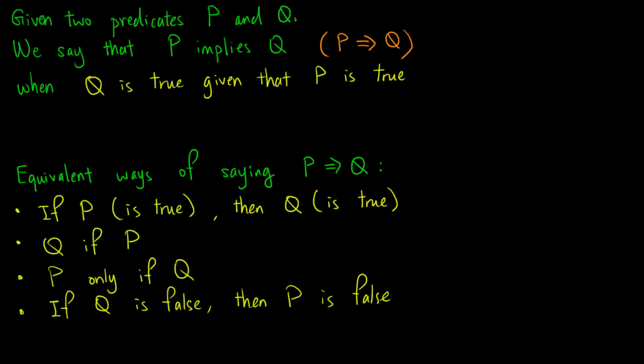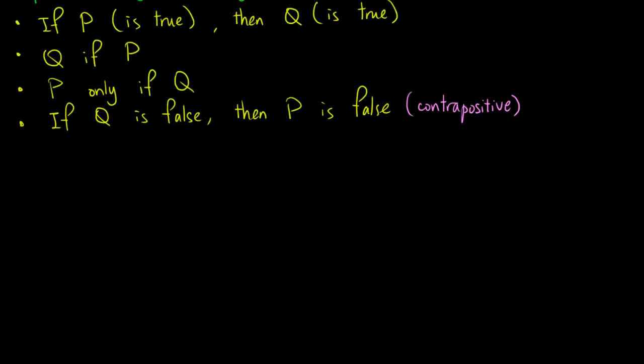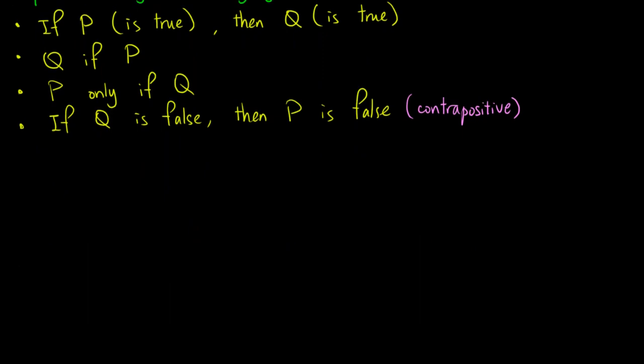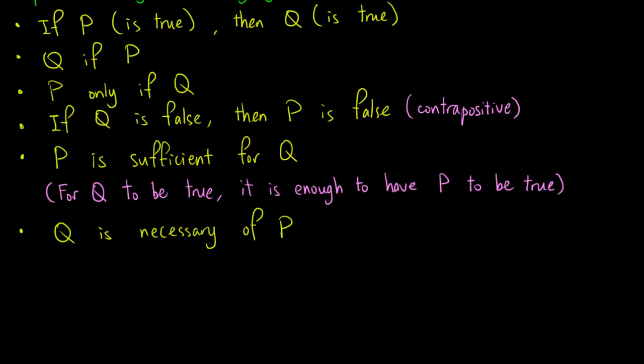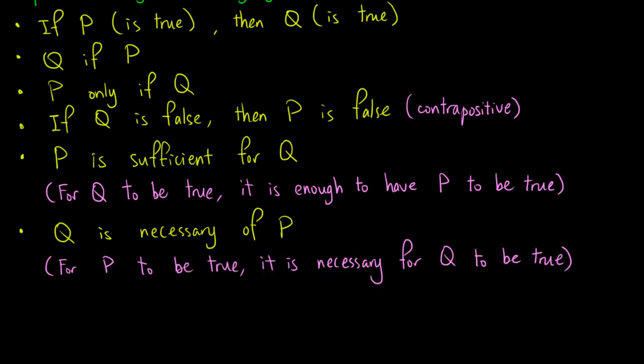Then, we have: 'if q is false, then p is false.' This is just the contrapositive of 'if p then q,' which we know are equivalent. Two more sayings which are perhaps less common but important: 'p is sufficient for q,' and 'q is necessary for p.' The first means that for q to be true, it is enough to have p be true. The second means that for p to be true, it is necessary that q is true. We can think about these by using two circles to represent p and q, providing an important perspective on implication.